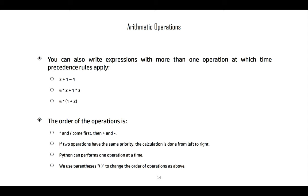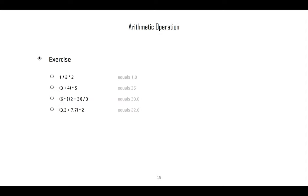Python can perform one operation at a time only. As an exercise: 1 / 2 × 2 = 1.0, 3 + 4 × 5 = 23.